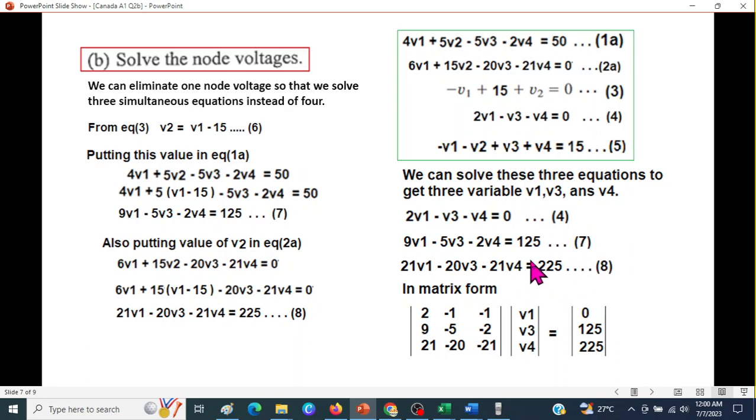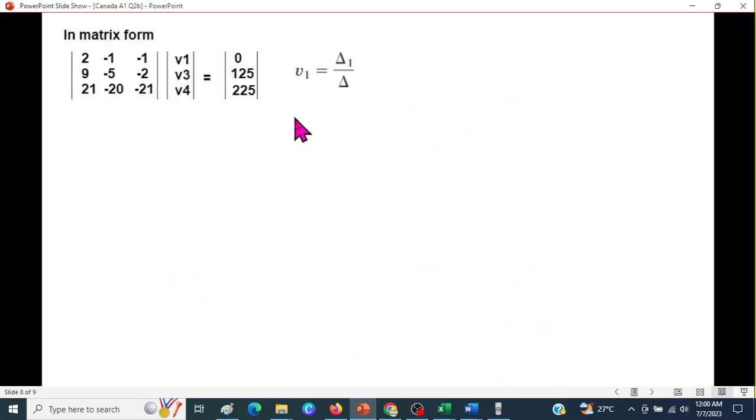We can solve these three equations by getting three variables V1, V3 and V4. So, equation number 4, this one we are taking. We have taken equation 7 and we have taken equation 1. Now, there are several ways of solving. You can follow any. But I think the easiest would be to go by the matrix rule. So, we are writing this in terms of matrix. I hope you know how to write it in terms of matrix. And then, by Cramer rule, we can find the voltages. So, these are the three unknown now. V1, V3, V4 we have to find. And this is the formula. Delta 1 divided by delta is V1. Delta 3 divided by delta will be V3. And delta 4 divided by delta will be V4.